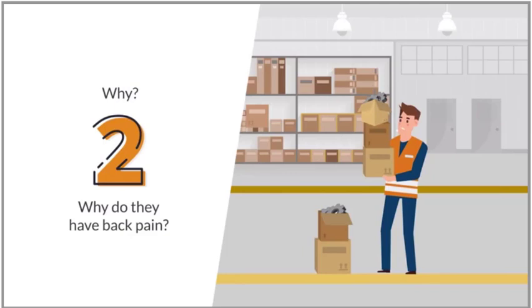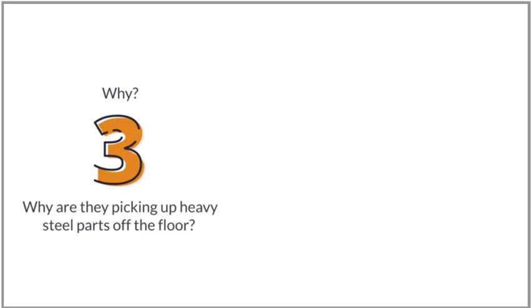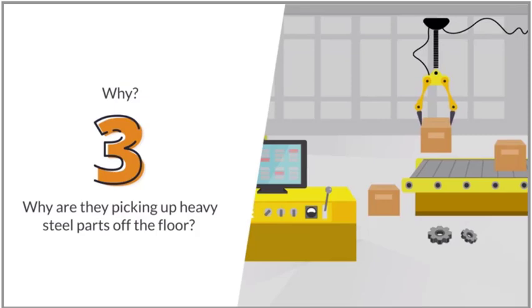Why are they picking up heavy steel parts off of the floor? That isn't our standard procedure. Third, why? Some steel parts fall off the conveyor belt during production.